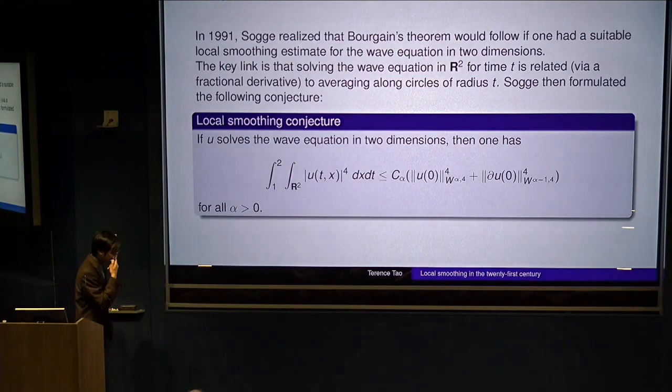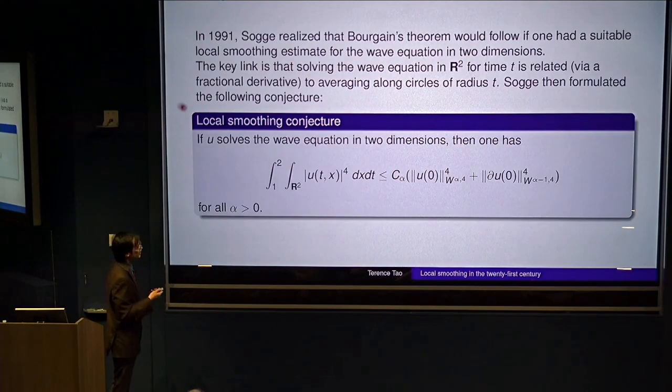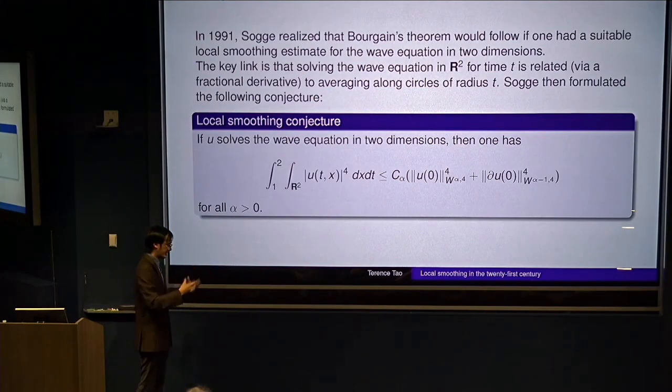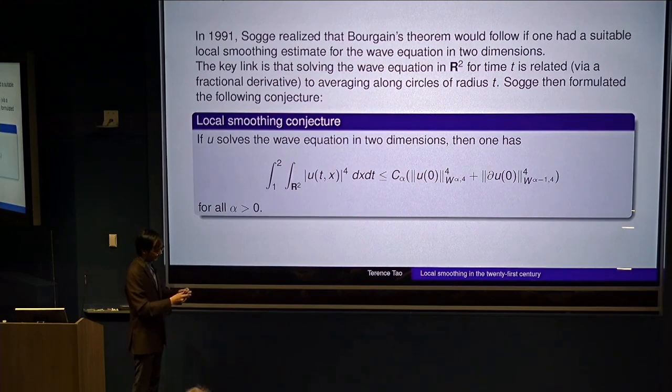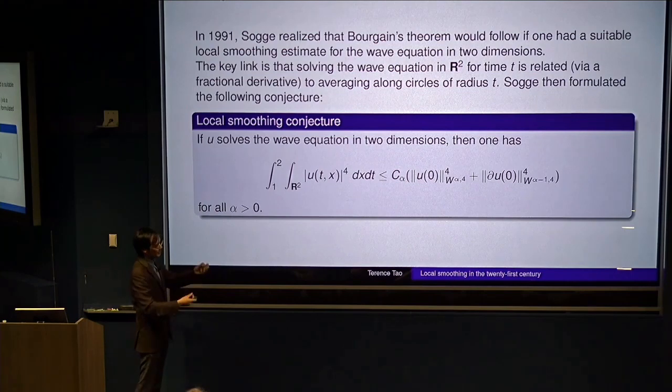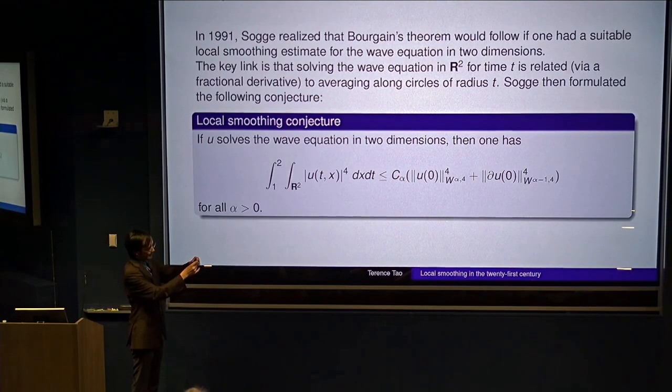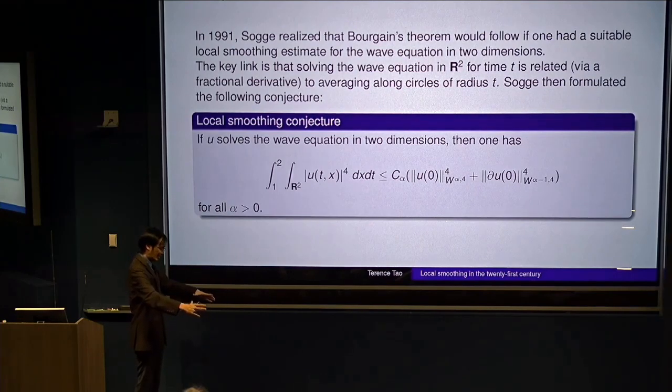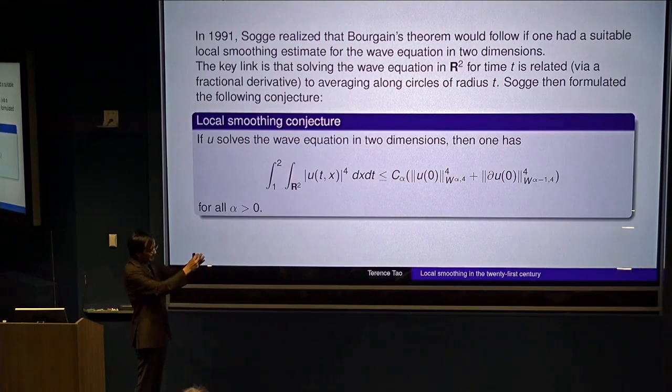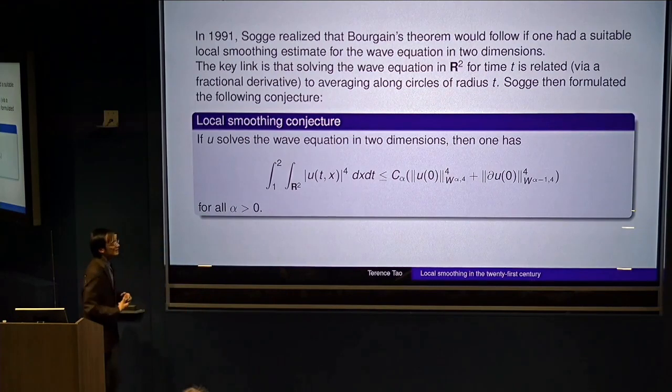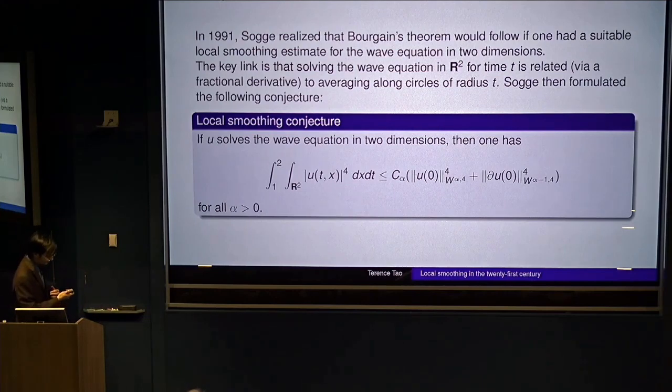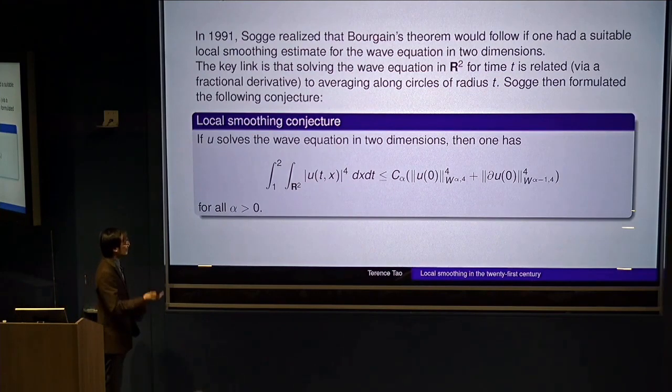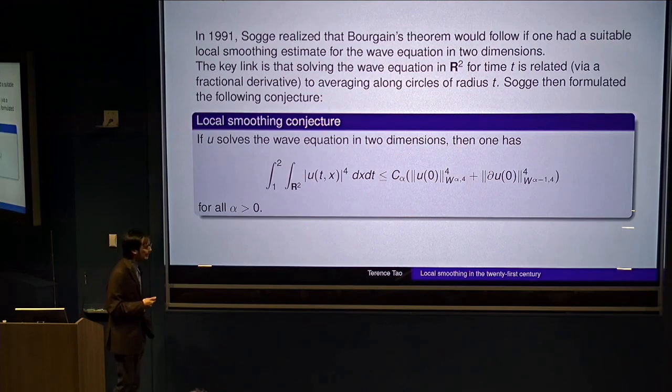There was a simple proof given by Chris Sogge later, that he realized that actually, these question of circular averages are actually closely related to the wave equation. That, you know, waves propagate out in circles, in two dimensions, pretty much. And conversely, if you want to know what a solution is doing at time t, you can propagate backwards in time, and there'll be a circle. And what the wave is doing on that circle will tell you what the wave is doing now. And he could rewrite Bourgain's Circular Maximal Theorem in terms of the wave equation. And he reproved it.